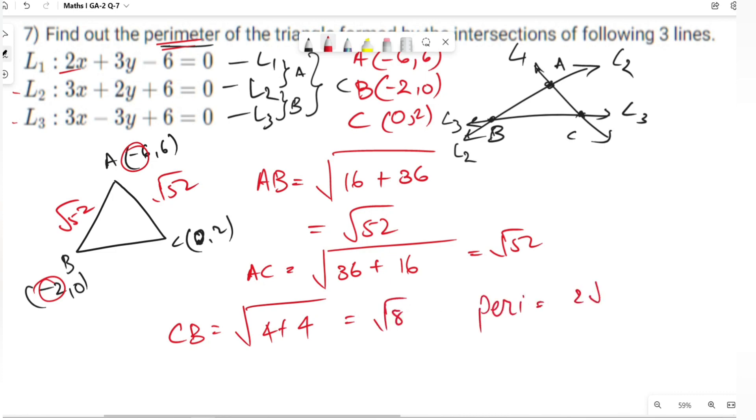Perimeter equals 2 root 52 plus root 8, which equals 17.25 units.